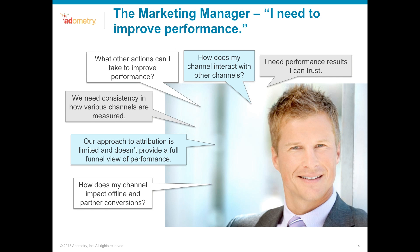For the marketing manager, this is where attribution gets a little challenging because everyone's in their comfort zone optimizing their channel, using their own metrics, and now all of a sudden being asked to perform as a team and drive greater results across the entire marketing mix. Key questions: what other actions can I take to improve performance? I have a limited view of my performance based on my current attribution model — what other opportunities exist? How does my channel interact with other channels? And how do I use last-click vs. full-funnel? If I'm doing paid search or affiliate, what are the opportunities for keywords and affiliates that drive top or middle-of-funnel performance?